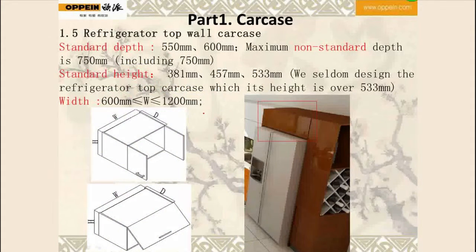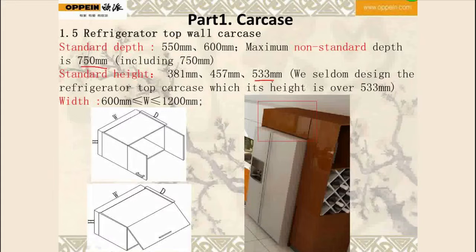For refrigerator top wall carcass, the standard depth is 550 or 600 mm and the maximum non-standard depth is 750 mm. The standard heights are 381 mm, 457 mm, and 533 mm. We shall not design the refrigerator top carcass with a height over 533 mm. The width can range from 600 mm to 1,200 mm. These two pictures show the refrigerator top wall carcass.